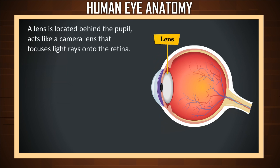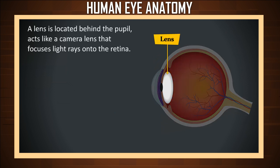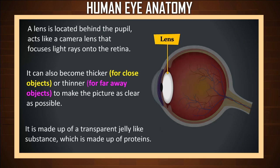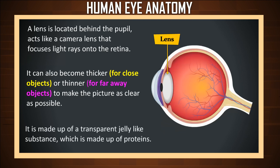Lens. A lens is located behind the pupil and acts like a camera lens that focuses light rays onto the retina. It can also become thicker for close objects, or thinner for far away objects, to make the picture as clear as possible. It is made up of a transparent jelly-like substance, which is made up of proteins.